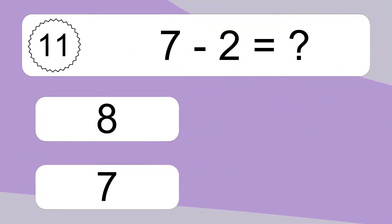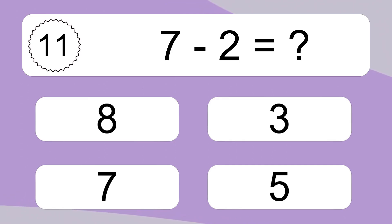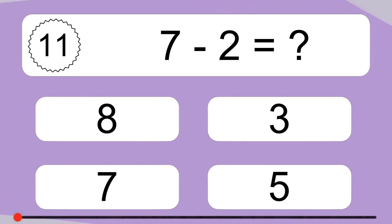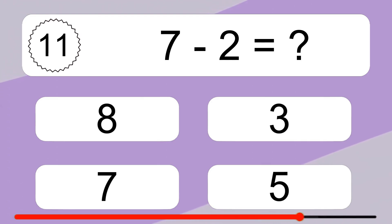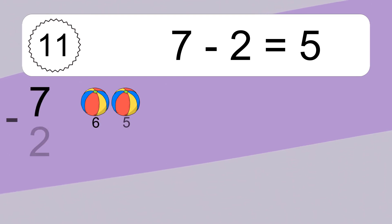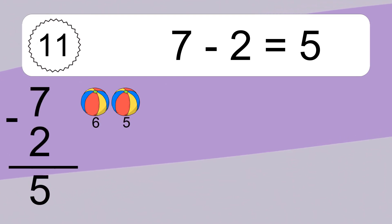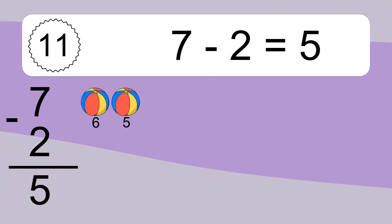7 minus 2 equals what? 7 minus 2 equals 5. Let's count it: 6, 5.